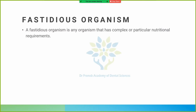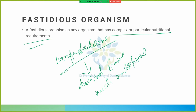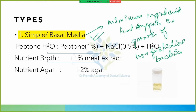A fastidious organism is one that has complex or particular nutritional requirements. A non-fastidious organism does not have much nutritional requirement. Simple or basal media is used for non-fastidious organisms.